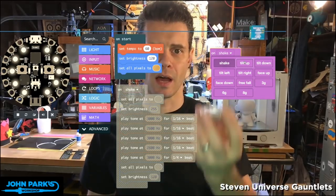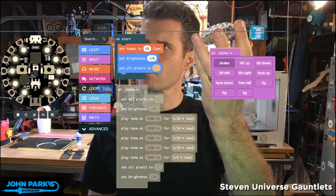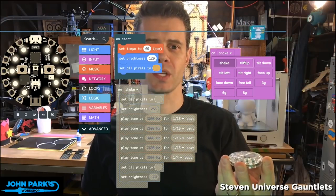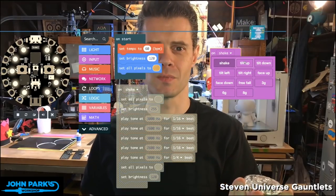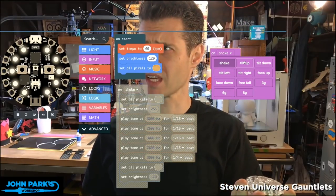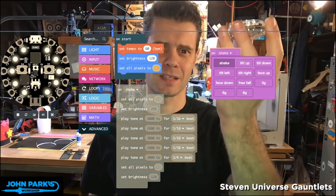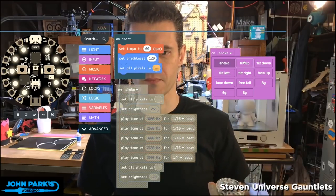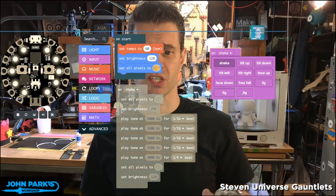There's also a free fall, which detects the rapid change of whichever one was getting around 9.8 meters per second squared set to zero because it's falling through space. And then you can also set to three Gs, six Gs and eight Gs.